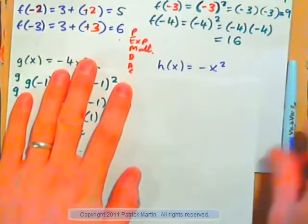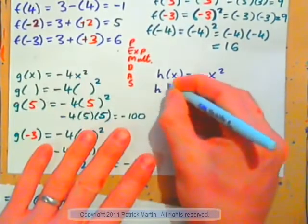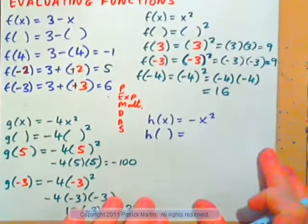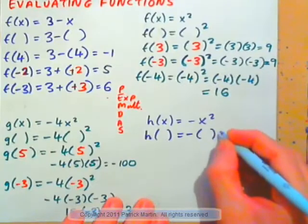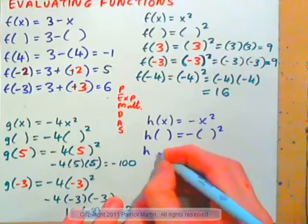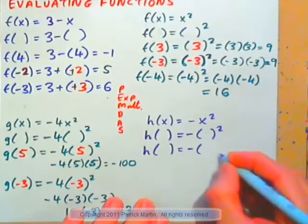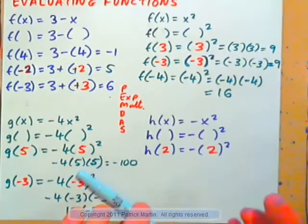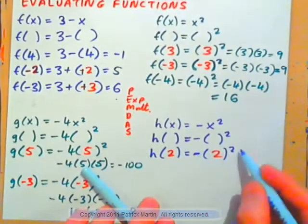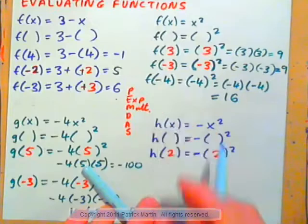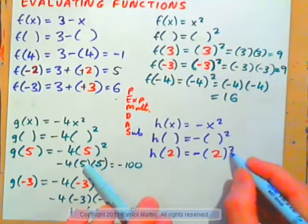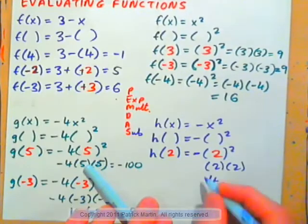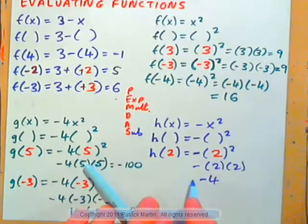Let's have a look at h of x equals negative x squared. h of parentheses would be negative parentheses squared. So, if the input was 2, the output would be negative 2 squared. What do we do first — apply the exponent or subtract? Apply the exponent first. The exponent only applies to the 2, not the negative. So, that's 2 times 2, which is 4, and the negative is on the outside. So, h of 2 is negative 4.